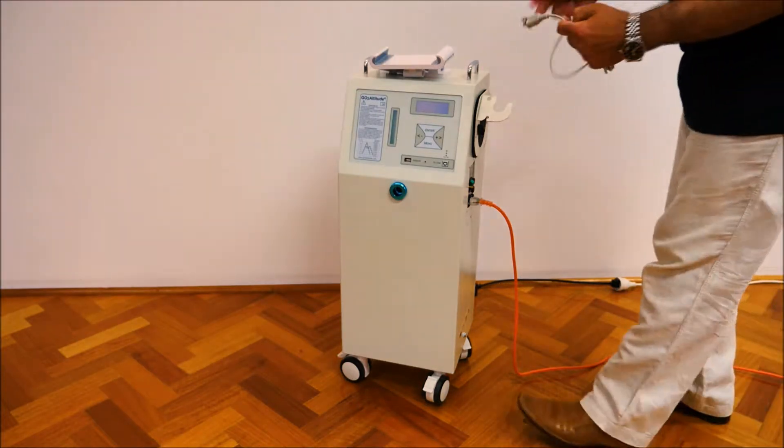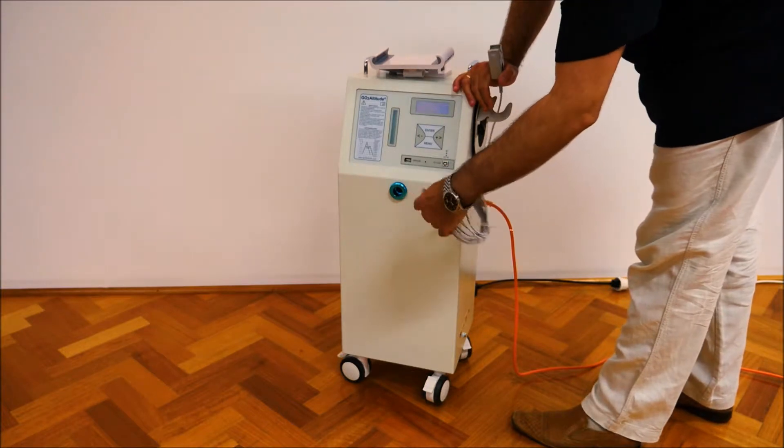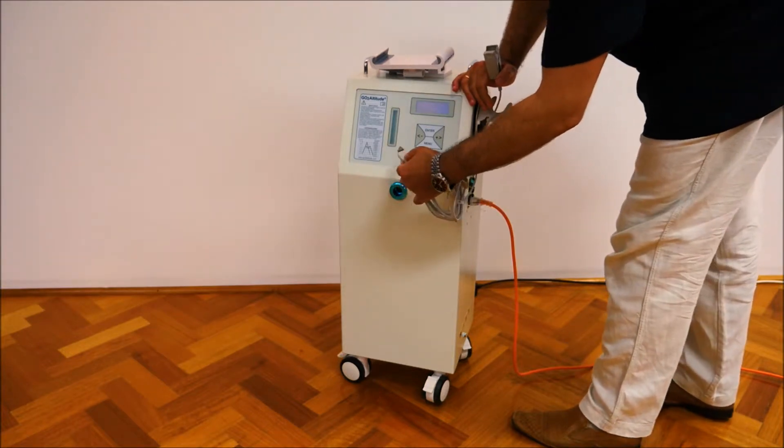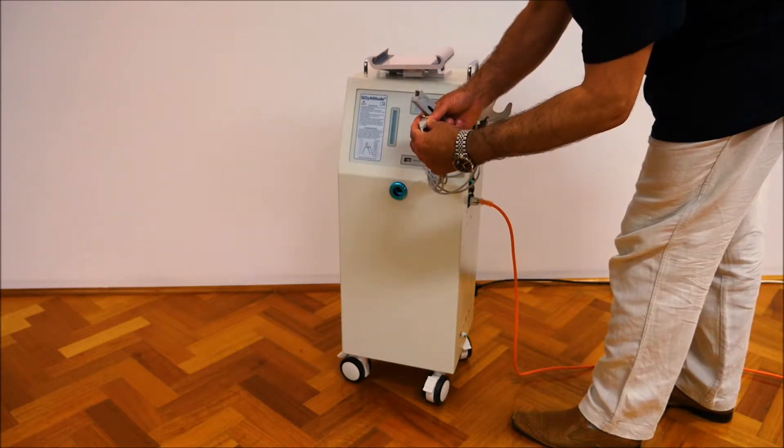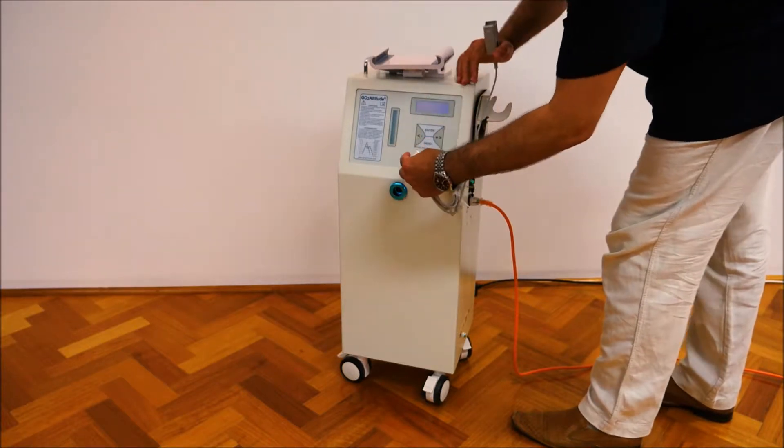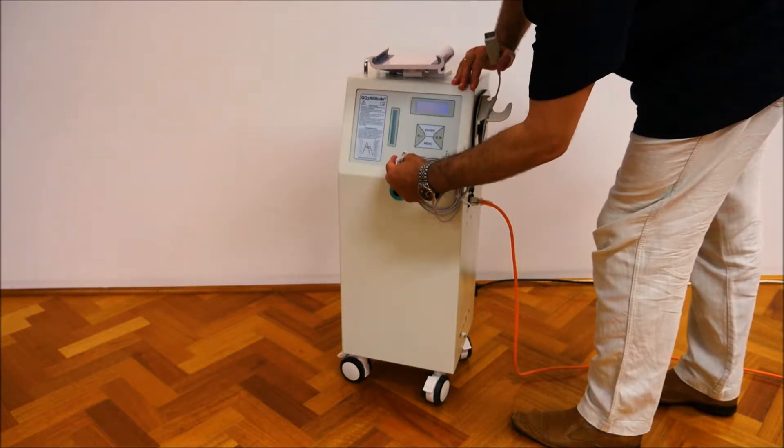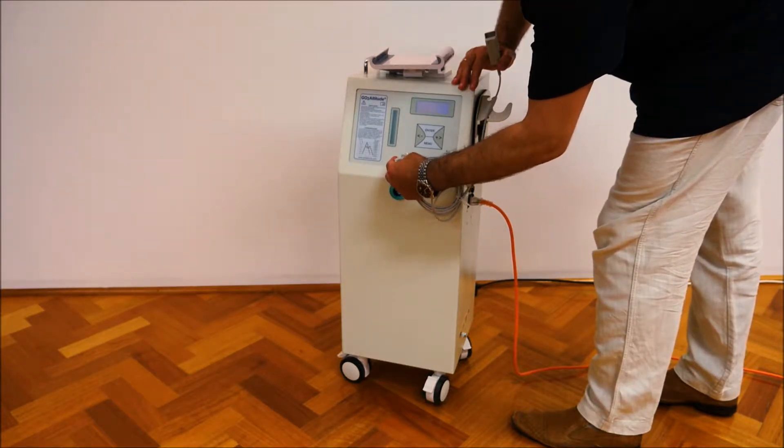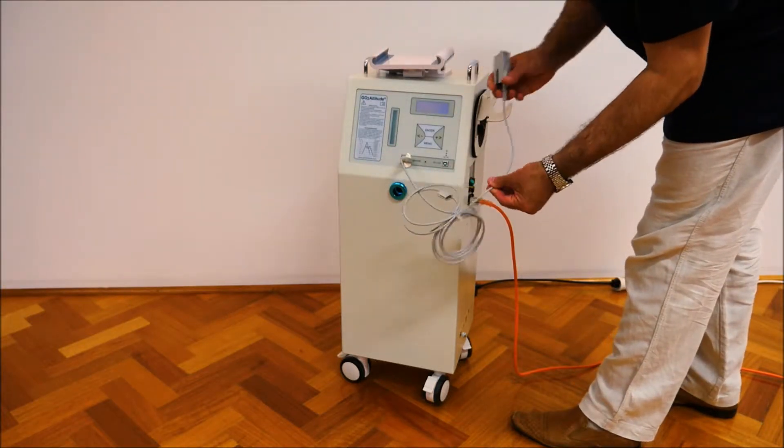Now we can connect our SPO2 or pulse oximeter sensor to the front panel socket. You may note there is a pointing up narrow part of the sensor indicating that it should be inserted this way. And there is a magnetic locking mechanism that holds it in place.